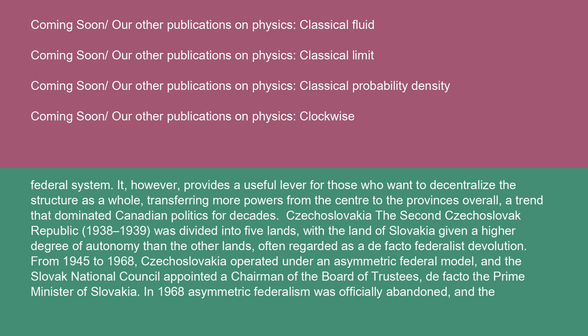Czechoslovakia: the second Czechoslovak Republic, 1938 to 1939, was divided into five lands, with the land of Slovakia given a higher degree of autonomy than the other lands, often regarded as a de facto federalist evolution. From 1945 to 1968, Czechoslovakia operated under an asymmetric federal model, and the Slovak National Council appointed a chairman of the Board of Trustees — de facto the prime minister of Slovakia.